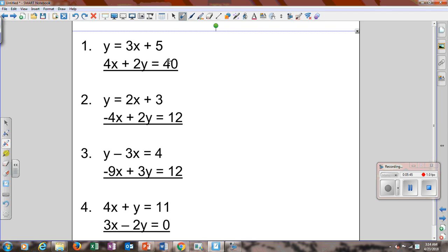So first, we have y equals 3x plus 5. And then that's 4x plus 2y. We already have y by itself. So we substitute that equation into the second one. Gives you 4x plus 2 times 3x plus 5 equals 40. Distribute the 2. 4x plus 6x plus 10 equals 40. Combine your like terms. 10x plus 10 equals 40. Subtract the 10 over. You have 10x equals 30. Divide by 10. X equals 3.